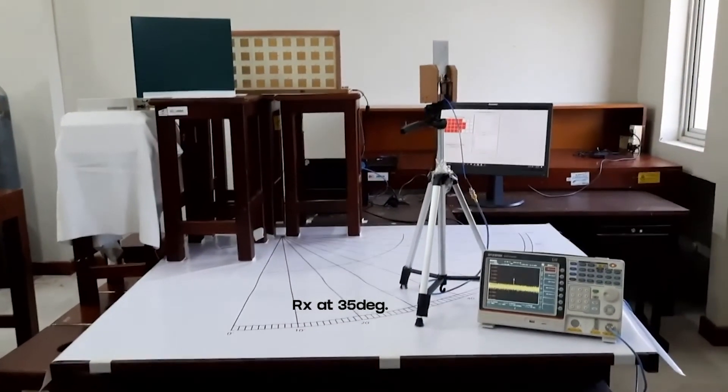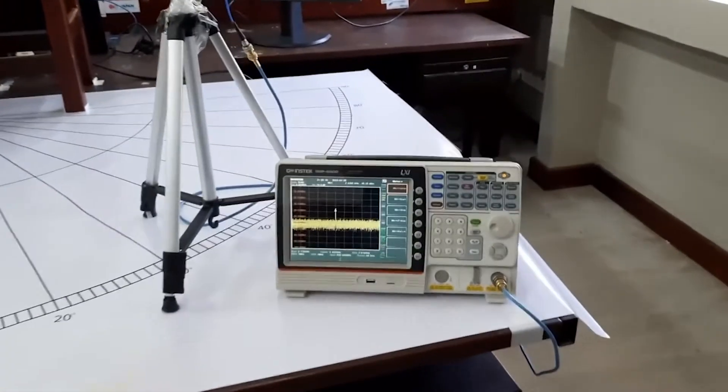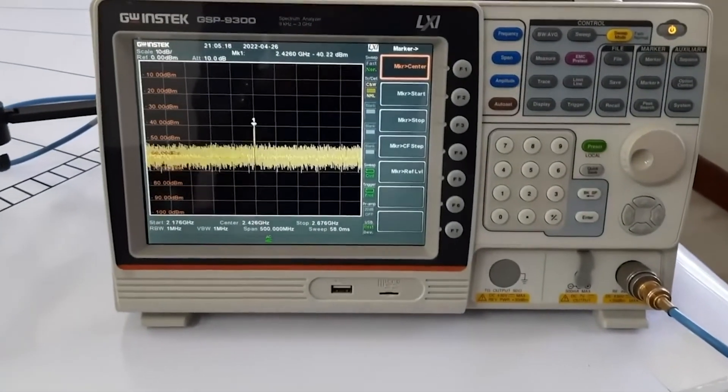Now the receiver is at 35 degree direction, and you can see the power level at that direction which is around minus 40 dBm.